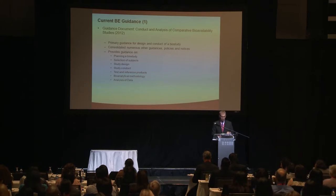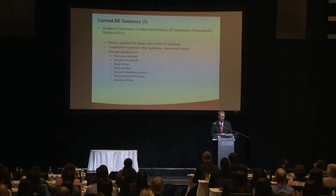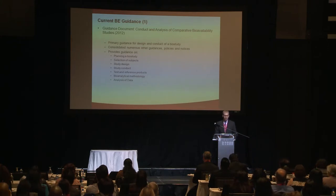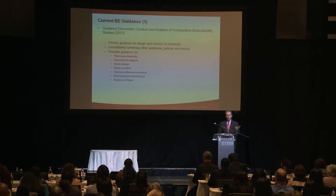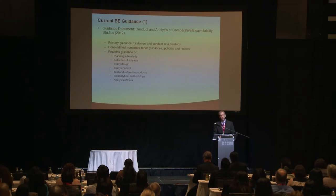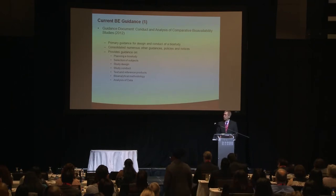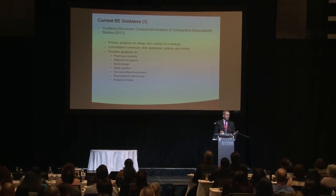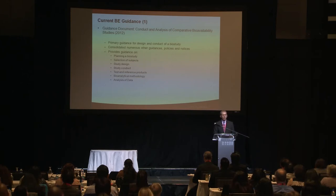Briefly going through our current situation: we have two key bioequivalence guidance documents. The first is the Conduct and Analysis of Comparative Bioavailability Studies. This is our primary guidance for the actual design and conduct of comparative bioavailability and bioequivalence studies. When it was published in 2012, it consolidated many previous documents — guideline A, guideline B, report C, and several other notices and smaller documents. It provides advice on planning a study, selection of studies, study design, conduct, selection of tests and reference products, bioavailability methodology, and statistical analysis — both bioanalysis and statistical analysis of the outcome.